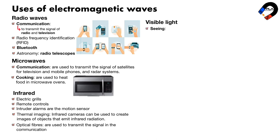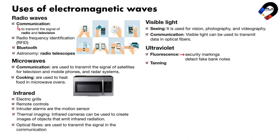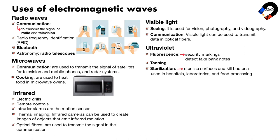Visible light is the part of the electromagnetic spectrum that can be detected by the human eye. It is used for vision, photography, and videography, and can also be used to transmit data in optical fibers. Ultraviolet — fluorescence: some substances glow when exposed to ultraviolet light, used to create security markings and detect fake banknotes. Tanning: ultraviolet light from the sun can cause tanning, but it can also cause skin cancer. Sterilization: ultraviolet light can be used to sterilize surfaces and kill bacteria, used in hospitals, laboratories, and food processing plants.